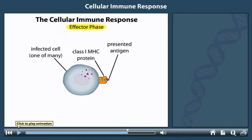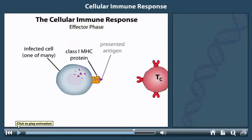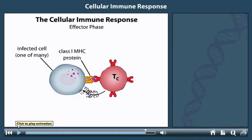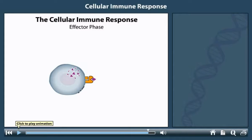Cytotoxic T cells from the activation phase, each with receptors specific for the viral antigen, bind to these complexes. Upon binding, a cytotoxic T cell is stimulated to release molecules called perforin. Perforin kills the target cell by causing the cell to lyse.